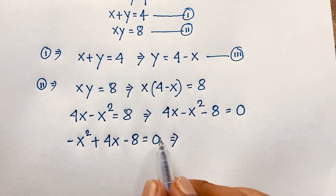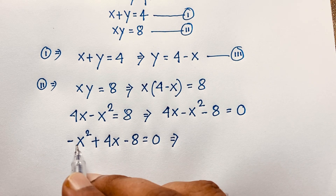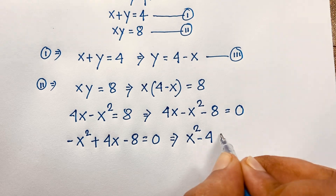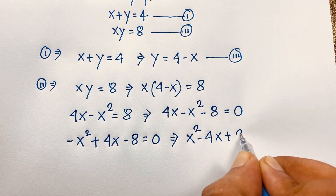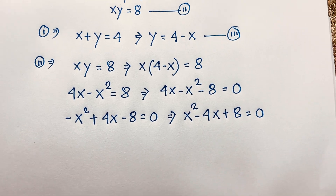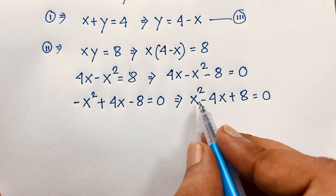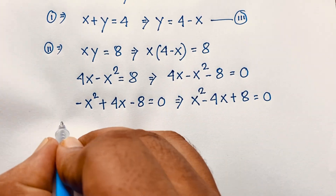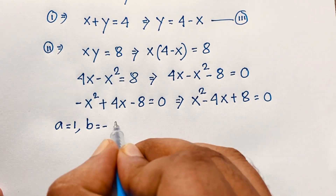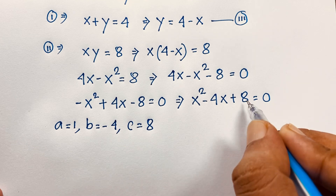This quadratic equation is: negative x squared plus 4x minus 8 equals 0. I multiply both sides by negative 1. Then this quadratic equation becomes: x squared minus 4x plus 8 is equal to 0. Here, a equals 1, b equals negative 4, and c equals 8.